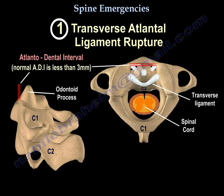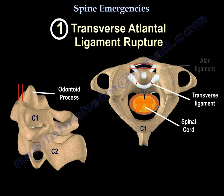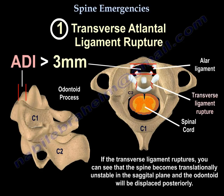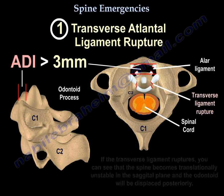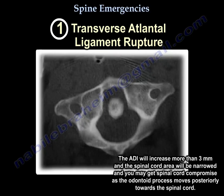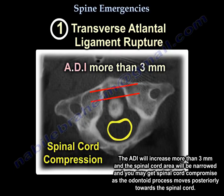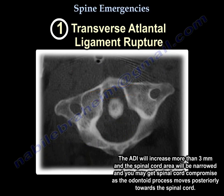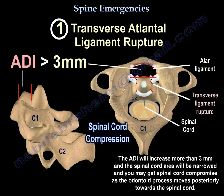The atlanto-dental interval (ADI) is normally less than 3 mm. If the transverse ligament ruptures, the spine becomes translationally unstable in the sagittal plane, and the odontoid will be displaced posteriorly. The ADI will increase to more than 3 mm, and the spinal cord area will be narrowed.